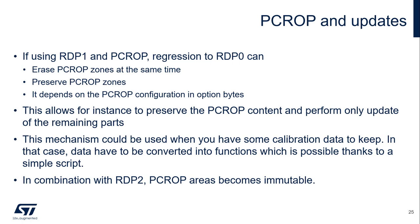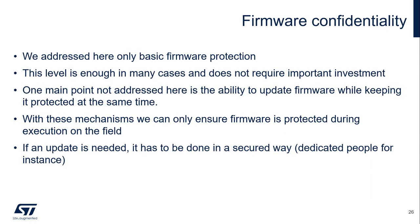In combination with RDP level 2, PCROP areas become immutable. Up to now, on the topic of firmware confidentiality, we have addressed only very basic firmware protection. This level is sufficient in many cases and does not require significant investment. One main point not addressed here is the ability to update firmware while keeping it protected at the same time. With these mechanisms, we can only ensure firmware is protected during execution in the field. If an update is needed, it must be done in a secured way by dedicated people.